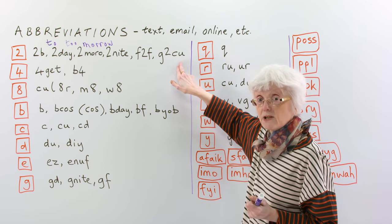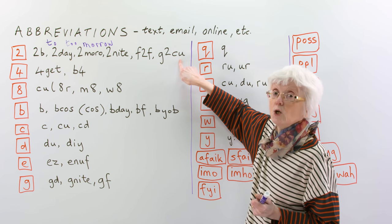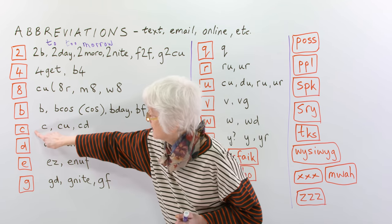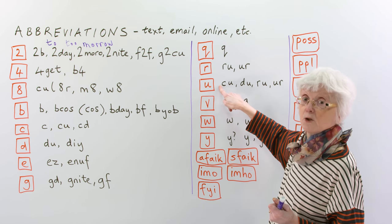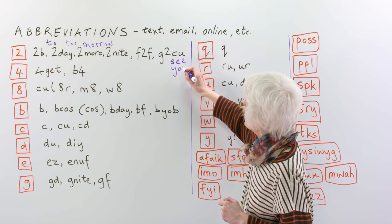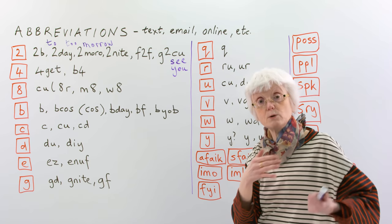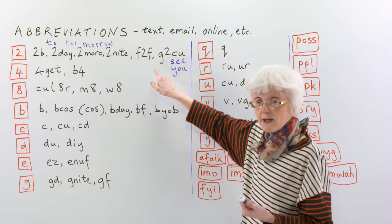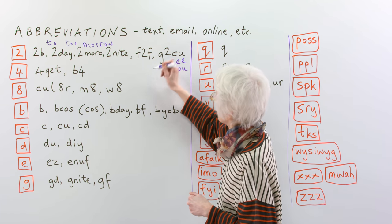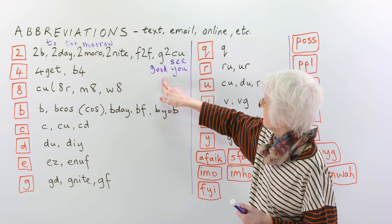And then this one, these letters we're covering later, but again, the two appears here, G-to-C-U. If you listen to C-U, if you say the letters C and U, it's C and U. So those letters sound like those words, so they are used to represent those words. And the G means good, good to see you. That's easy.